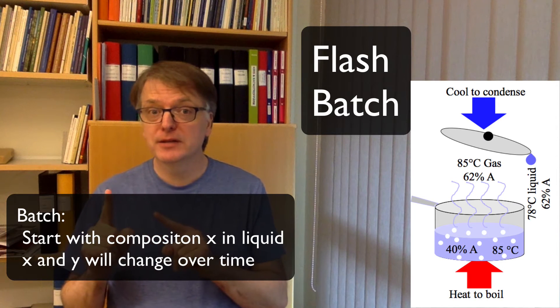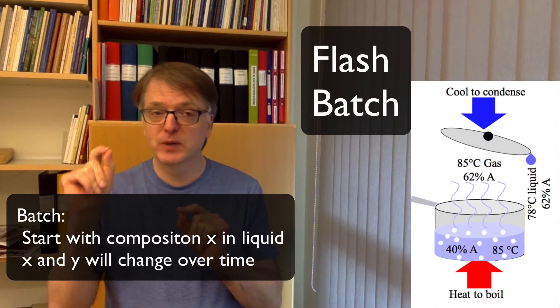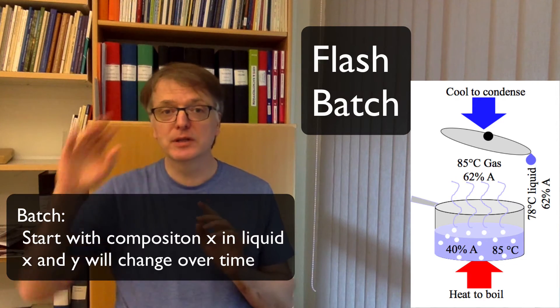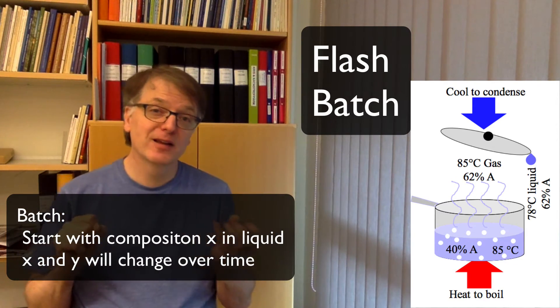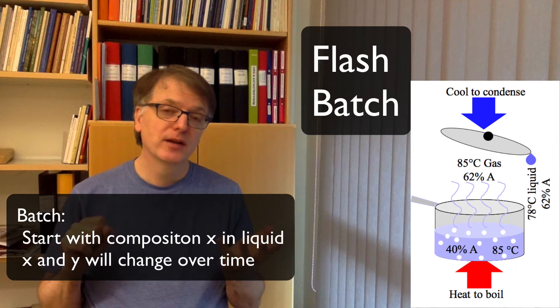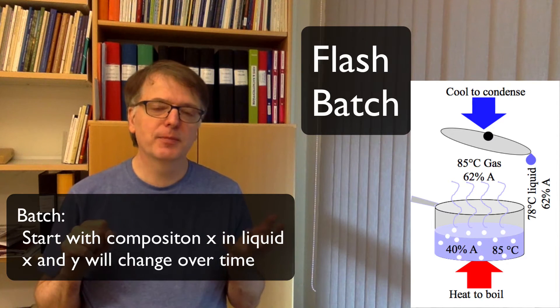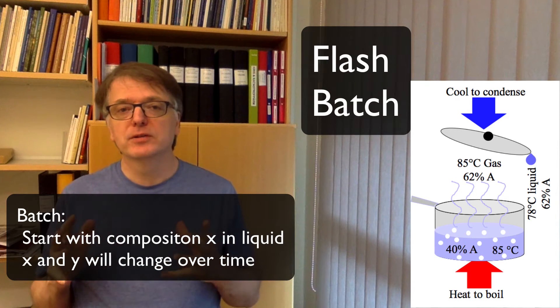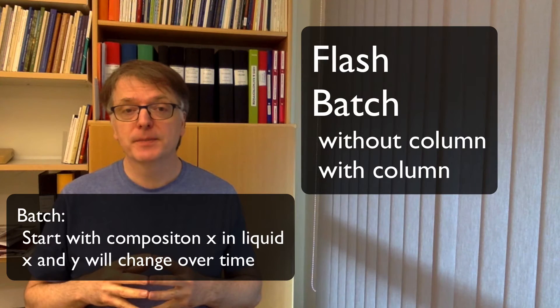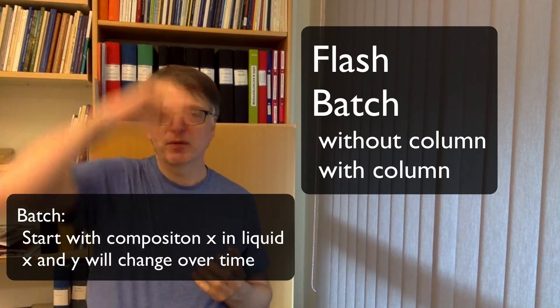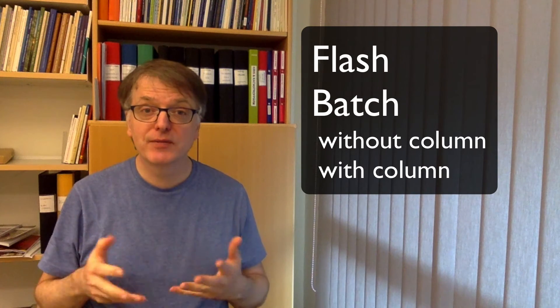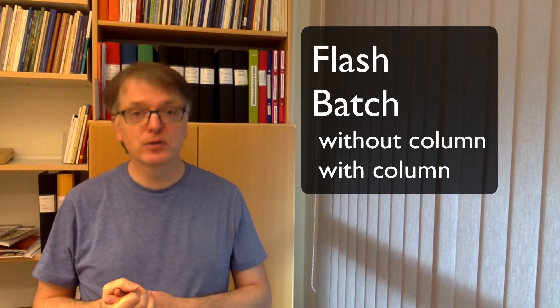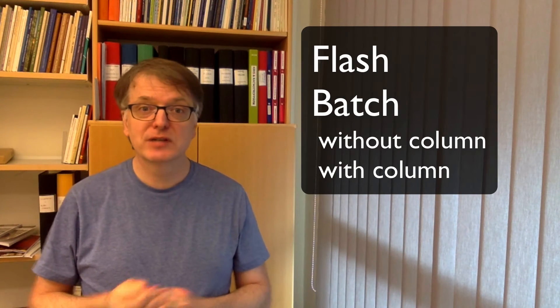One problem there is that the difference between the composition and the liquid that you can get out if you cool it and the composition you had to start with, that's not that big. It's only one equilibrium stage again at maximum, but you can add something on top of that, a column. But you still have the problem that things will change over time, at least if you're not doing very tricky stuff with the column.